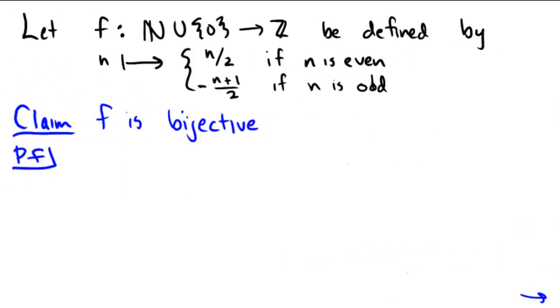If we let f be the function that goes from the natural numbers including 0 to the integers, defined by n going to n/2 if n is even and negative (n+1)/2 if n is odd, I claim that this particular function is bijective—that is, it's 1-to-1 and onto.